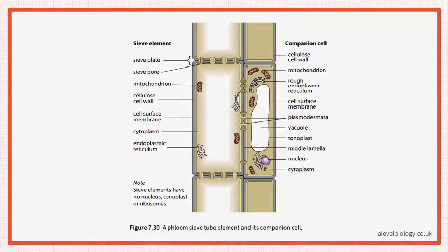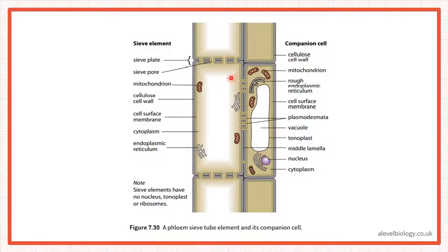Remember, these are not dead cells. Looking at a detailed diagram, we notice the sieve plate — the end walls are not completely destroyed, we have sieve plates with sieve pores. What you also notice is that cytoplasm is pushed towards the periphery, unlike the companion cell which is a complete cell. If you compare with the companion cell, they have all the features of a typical plant cell. In sieve elements, only mitochondria and the endoplasmic reticulum can be seen.